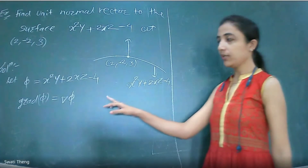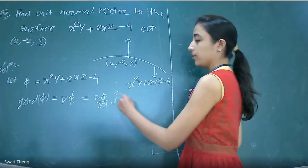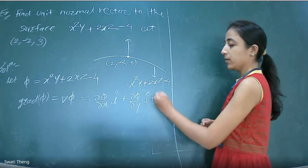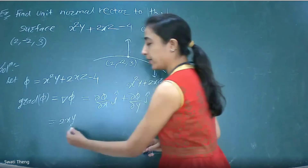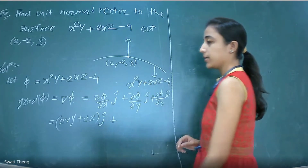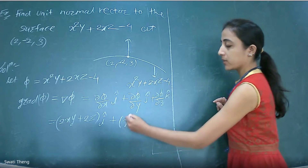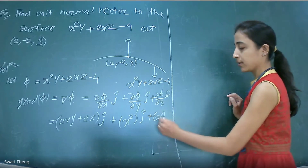Use the definition and then put the value. The definition gives: ∂φ/∂x î + ∂φ/∂y ĵ + ∂φ/∂z k̂. Putting in φ = x²y + 2xz - 4: ∂φ/∂x = 2xy + 2z, so the first component is (2xy + 2z) î. The second component is ∂φ/∂y = x², giving x² ĵ. Differentiating with respect to z gives 2x k̂.